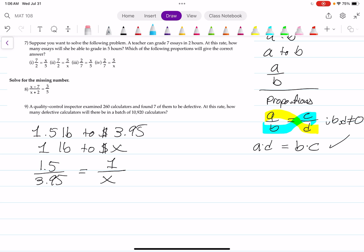Now we can cross-multiply. 1.5 times X is 1.5X, and that equals 3.95 times 1, which is just 3.95. That's great for us.